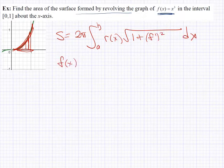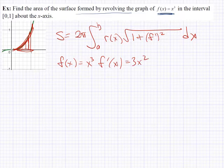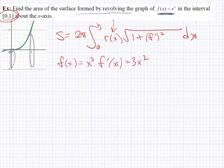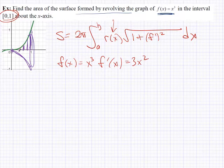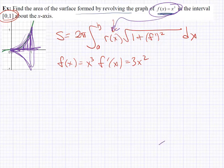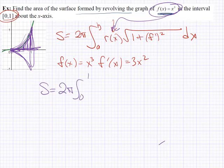We need f′. Since f(x) = x³, f′ = 3x². The interval a to b is 0 to 1, the x values for which this region spans. The only thing remaining is r(x). Remember, that represents the radius of the circle — the radius off of the axis of revolution. Think about the height of the rectangles: how would the height be calculated? It's x³. So x³ is going to be that radius we look at for the circles created through the revolution.